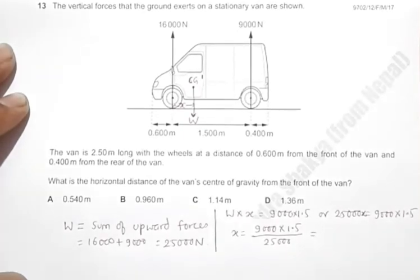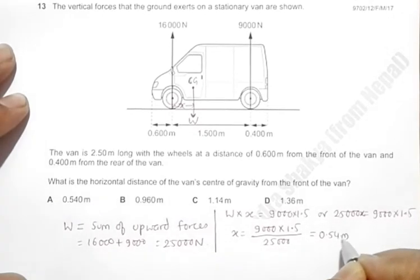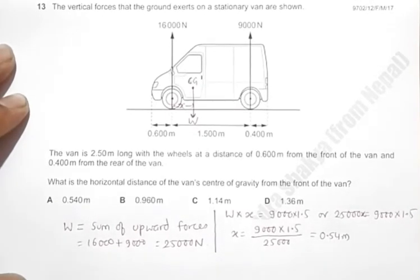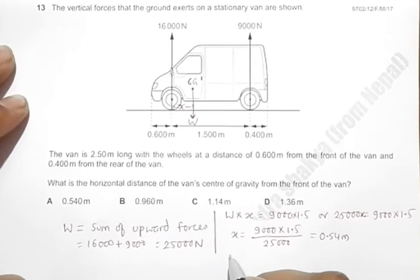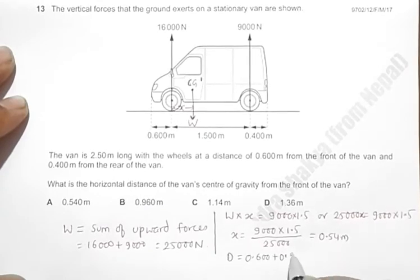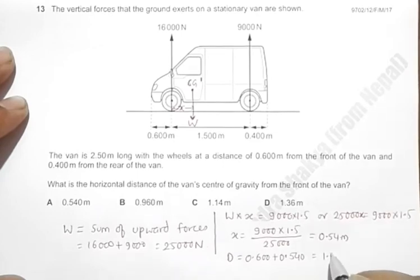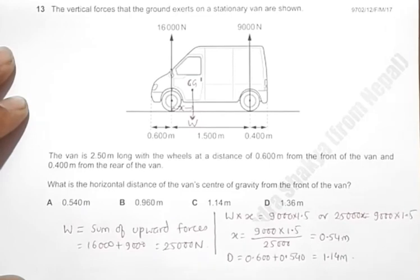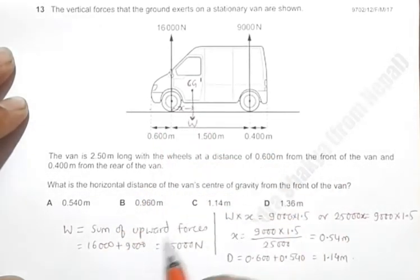Which will be equal to 0.54 meters. Now the total length from the edge will be our required distance, which equals 0.600 plus 0.540, which equals 1.14 meters.